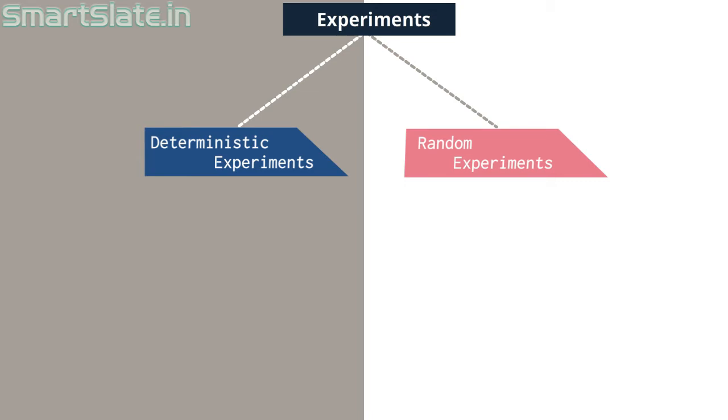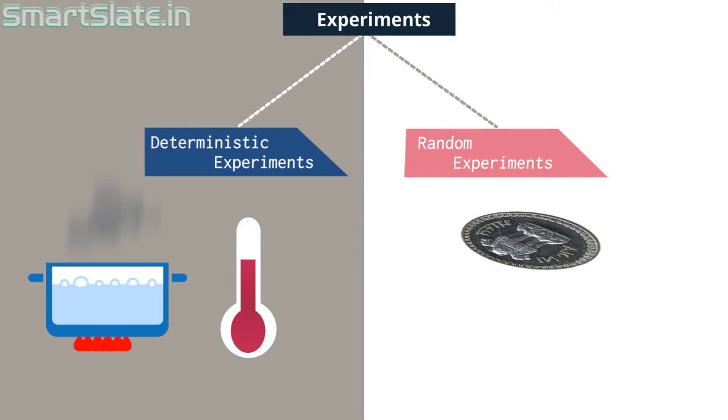For example, measuring the diameter of a coin or determining the boiling point of water. Random experiments are the experiments when repeated under identical conditions do not produce the same result or outcomes. For example, tossing a coin or throwing a die. In this chapter we will be discussing about random experiments only.